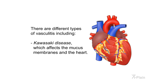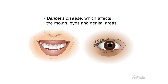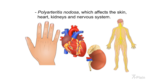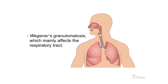There are different types of vasculitis, including Kawasaki disease, which affects the mucous membranes and the heart; Behcet's disease, which affects the mouth, eyes, and genital areas; polyarteritis nodosa, which affects the skin, heart, kidneys, and nervous system; and Wegener's granulomatosis, which mainly affects the respiratory tract.